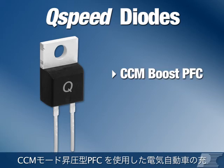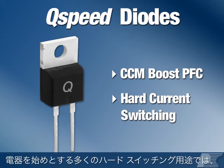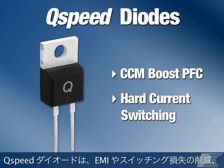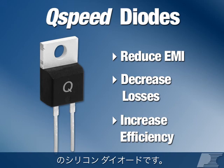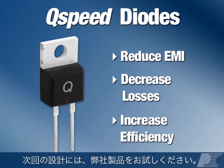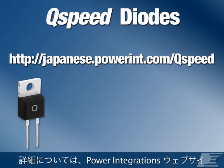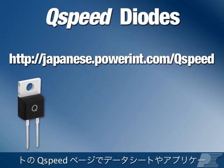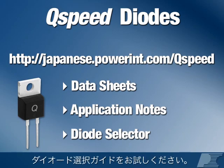For CCM Boost PFCs and other hard switching applications like electric vehicle chargers, Q-Speed diodes are the best-performance silicon diodes to reduce EMI, decrease switching losses, and provide very high efficiency. Try one in your next design. To learn more, please visit the Q-Speed page on the Power Integrations website to download data sheets and application notes, and to try our diode selector.